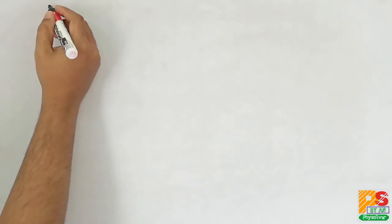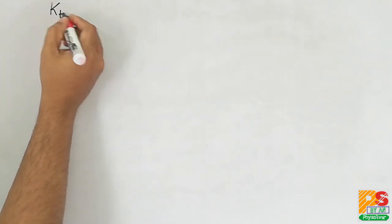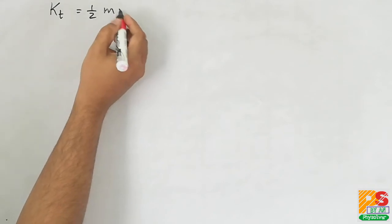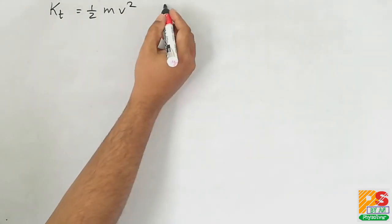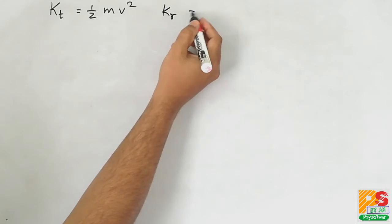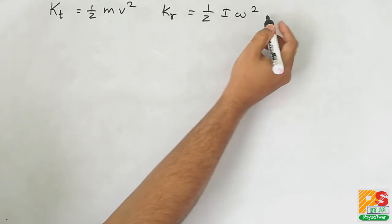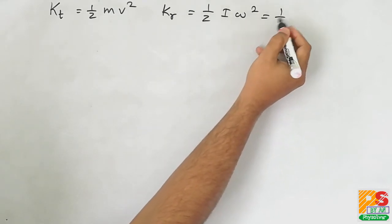Now we know in rolling motion, translational kinetic energy is half mv square, where v is the velocity of the center of mass. And KR, that is rotational kinetic energy, is half I omega square.